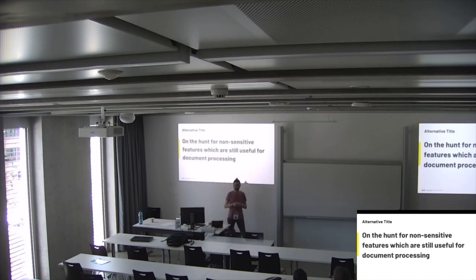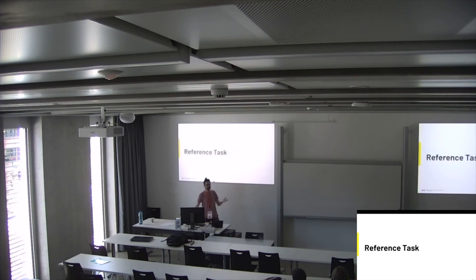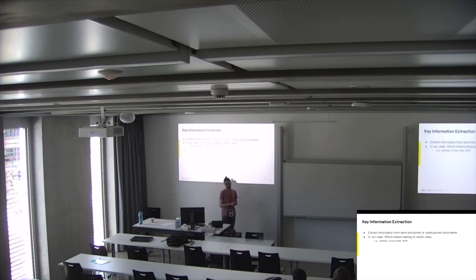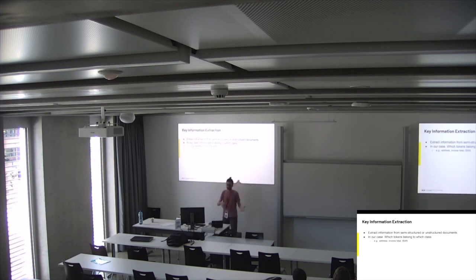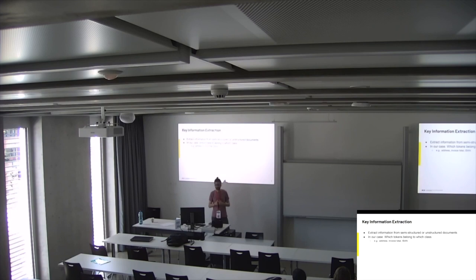An alternative title without fancy buzzwords could be: we are basically on the hunt for non-sensitive features which we can still use in document processing. We choose key information extraction as a reference task to showcase the capabilities of this representation. In key information extraction we try to extract relevant information from semi-structured or unstructured documents — which token belongs to which class. Sometimes we're interested in addresses, invoice total amounts, or IBAN numbers in banking documents.